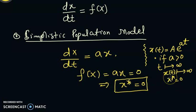That means if a > 0, then x* is a source. And since it is a source, it is an unstable equilibrium solution.